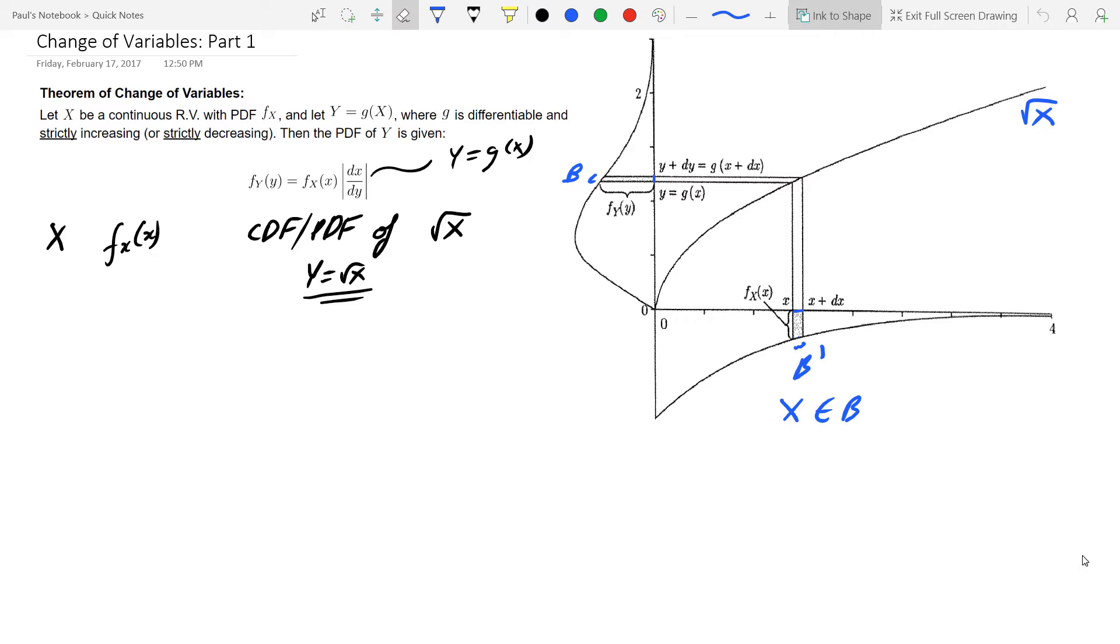So to begin, we first look at problems that we are faced with that require change of variables technique. First off, we imagine that there's an X random variable that has the density function f_X(x) here.